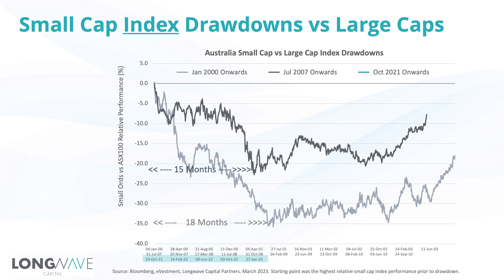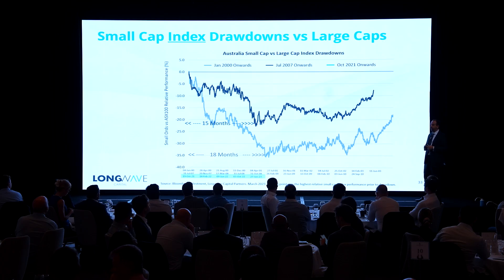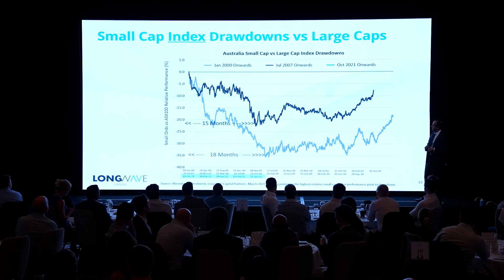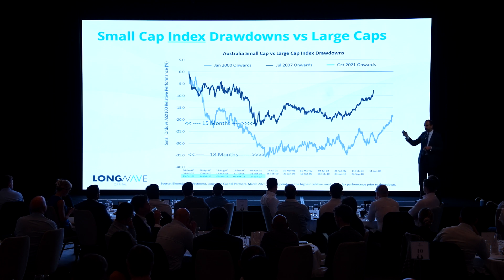Let's look at the GFC. It felt a lot worse than what that chart looks like — having lived through it running a small cap fund at the time, it did not feel like peak to trough was 15 months. But that was the period over which small caps underperformed in Australia at the index level, and they underperformed not quite 25%. Then small caps stopped underperforming versus large caps, and as the markets recovered, small caps started to do well.